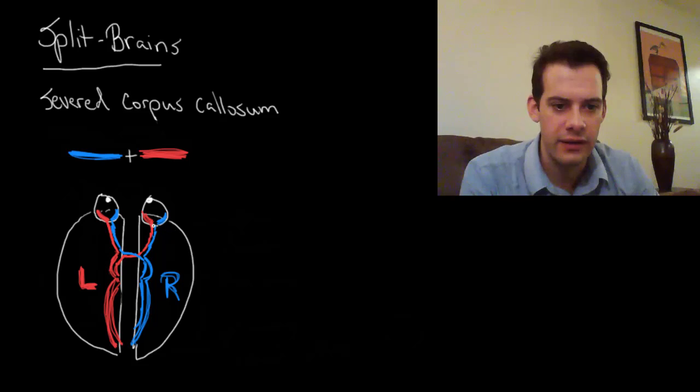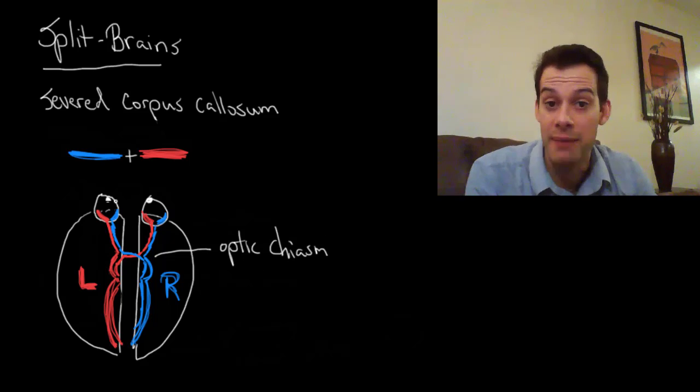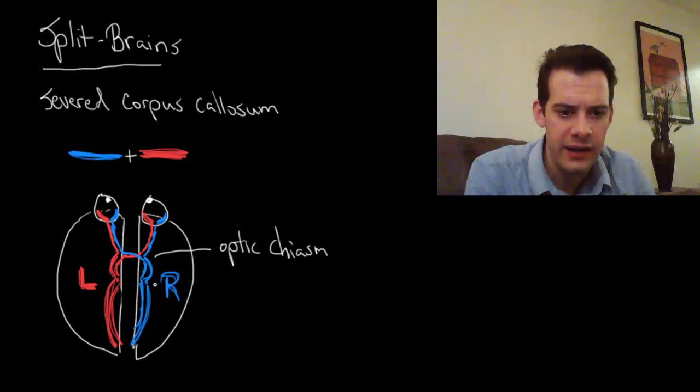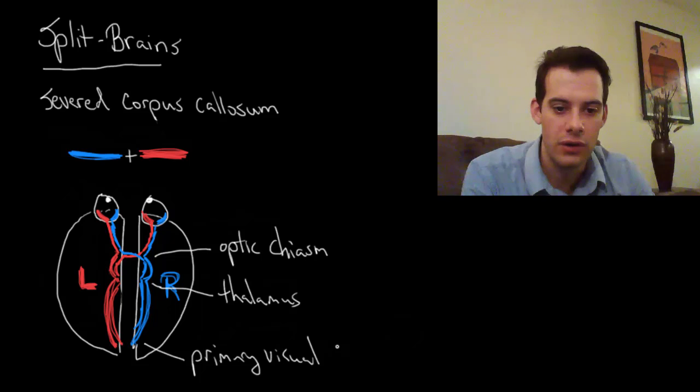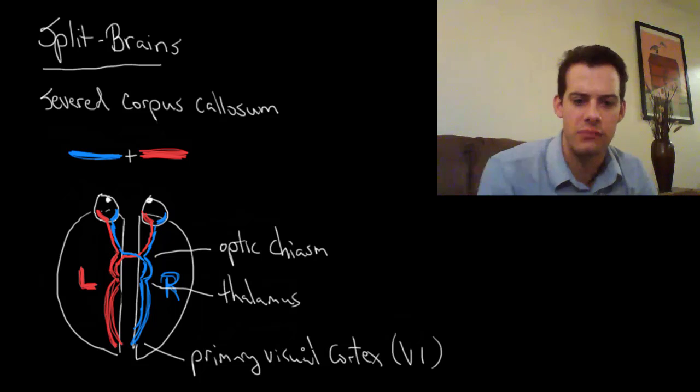And let me just add a few labels in here. So this point here would be the optic chiasm, that's where the information crosses over to get to the appropriate hemisphere. And then what I've drawn in here is, this is where it's going into the thalamus after the optic chiasm, and then from there it ends up in the occipital lobe in the primary visual cortex. This is an area called V1, the primary visual cortex.